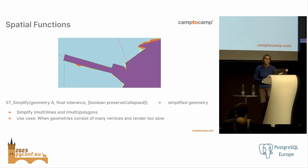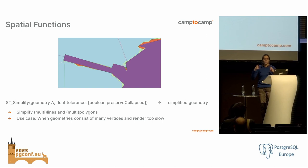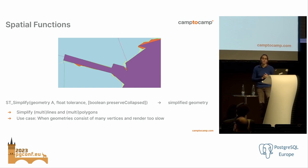Another use case I encounter often — on the application side, once data is in the database, some of the geometries are really, really complex. For a polygon, it might be made out of many, many points. To address that, there is a function called ST_Simplify. For lines, polygons, multi-polygons, and multi-lines, it simplifies the geometry using an algorithm and reduces the number of points it's made out of.